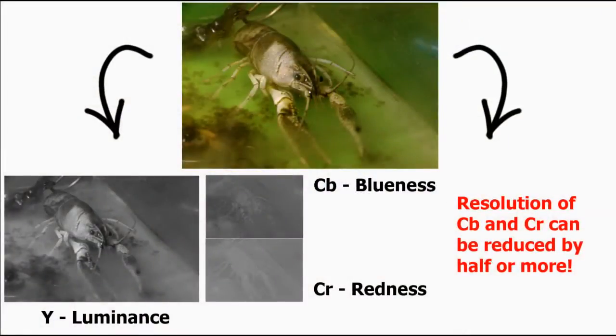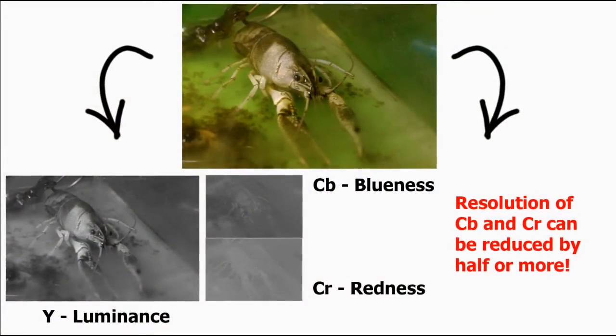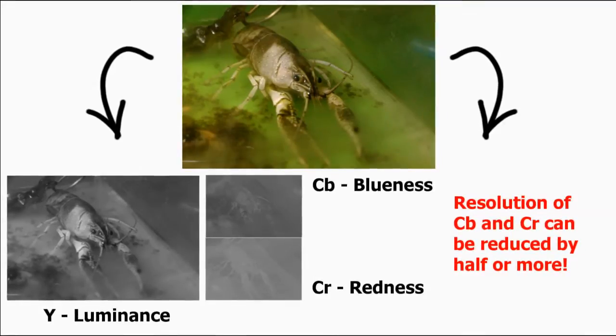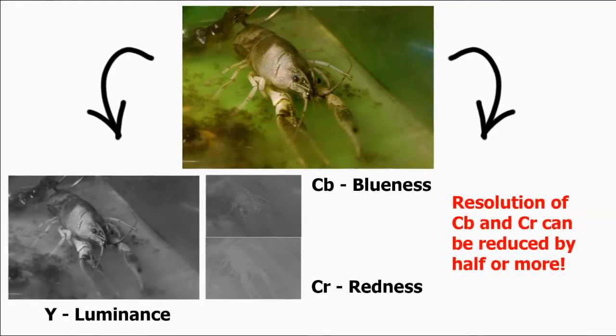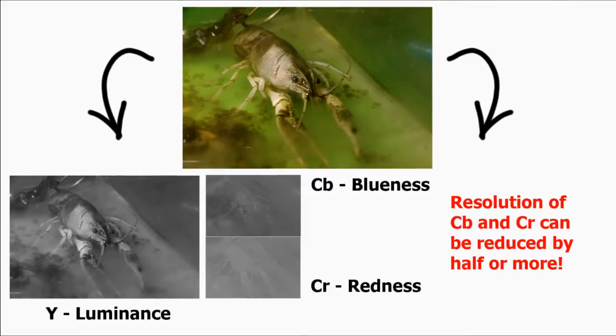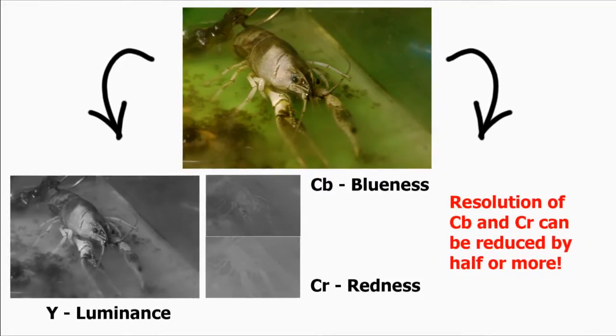What JPEG compression does is it takes the CB and CR channels and lowers the resolution on these channels, meaning color information is being discarded. Since the brightness information is not being compromised in this manner, the image still looks alright. So that was the first of three steps used by JPEG compression to throw away some data in a way that you cannot really see.